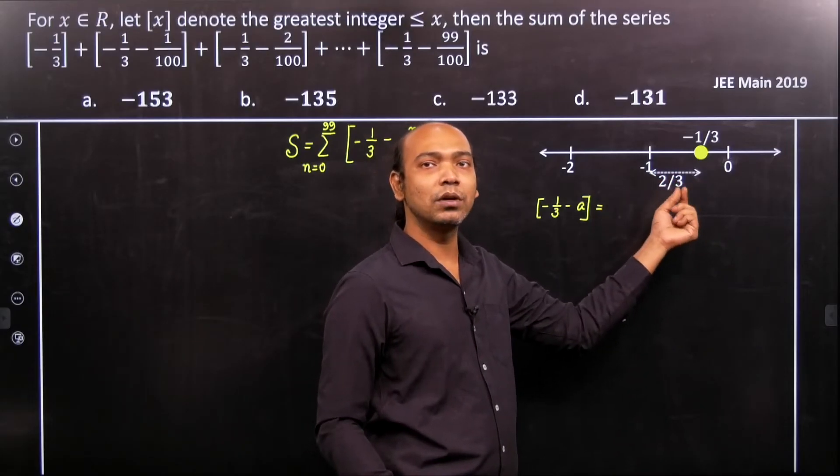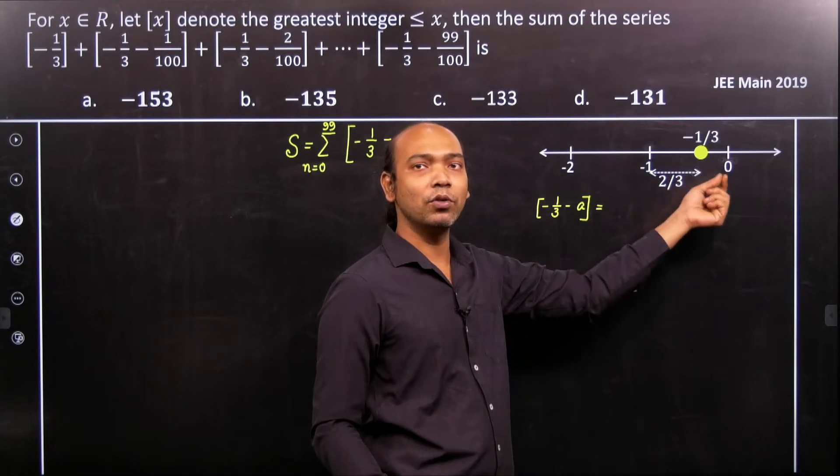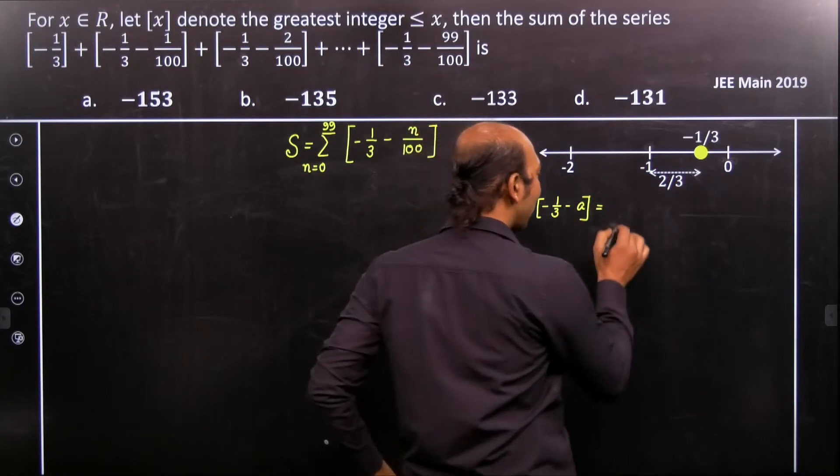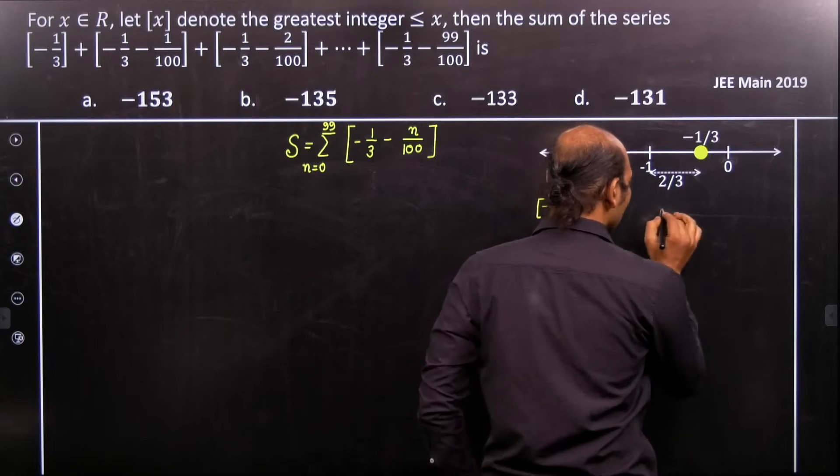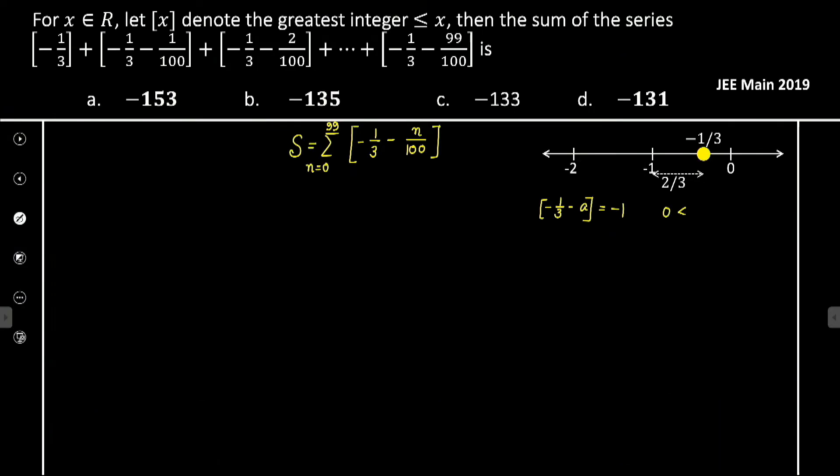Then this value will give you minus 1. So when a lies between 0 less than or equal to a less than or equal to 2 by 3...